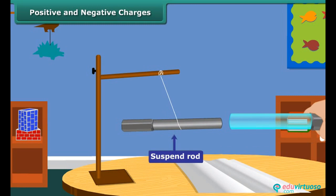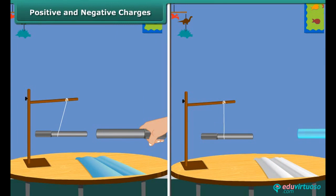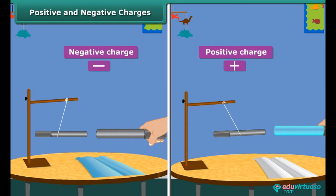The charges produced in the ebonite and the glass are different in nature. These two kinds of charges are called positive and negative charges. The positive charge is shown by the plus sign and the negative by the minus sign. Merely as a convention, the charge on a glass rod rubbed with silk is taken as positive, and that of an ebonite rod rubbed with woolen cloth is taken as negative.